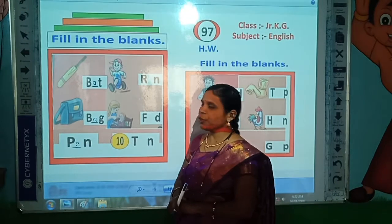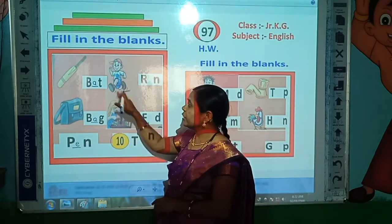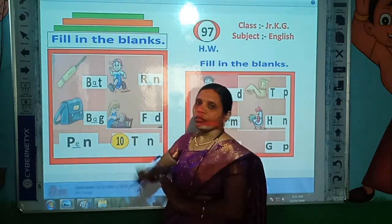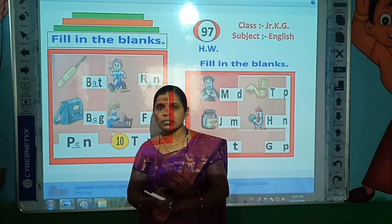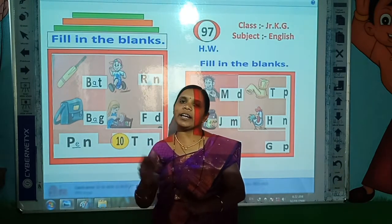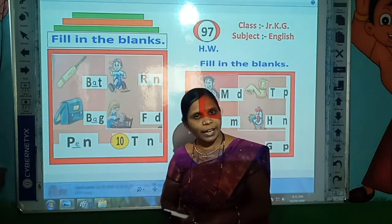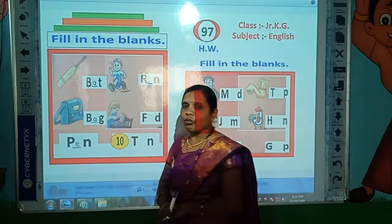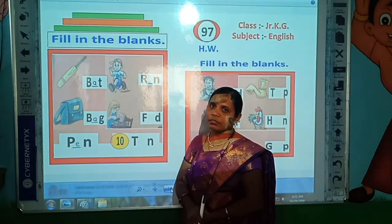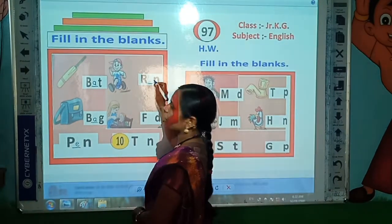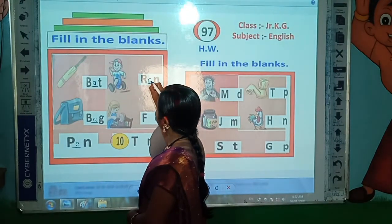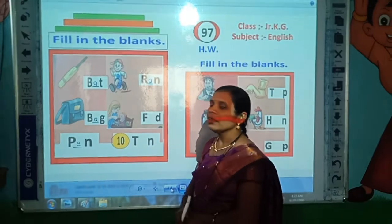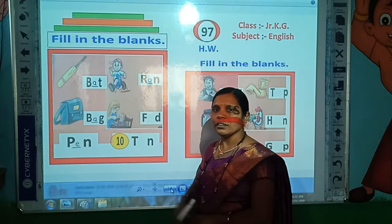Now look here. Which picture is this? Correct, this is the picture of RAN. Tell me, what is the spelling of RAN? Yes. R-A-N, RAN. R-A-N, RAN. Now read this: R-A-N, RAN. Which is the missing letter? A is the missing letter. So write here A. R-A-N, RAN. R-A-N, RAN. R-A-N, RAN.